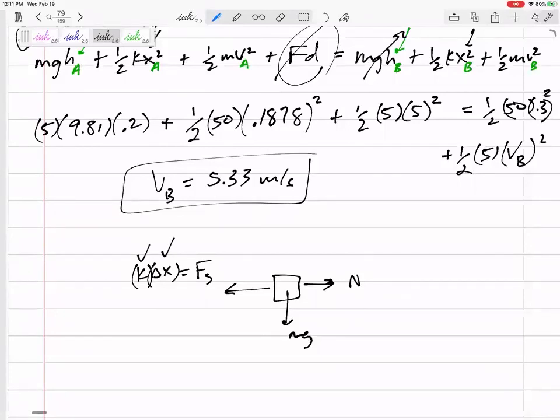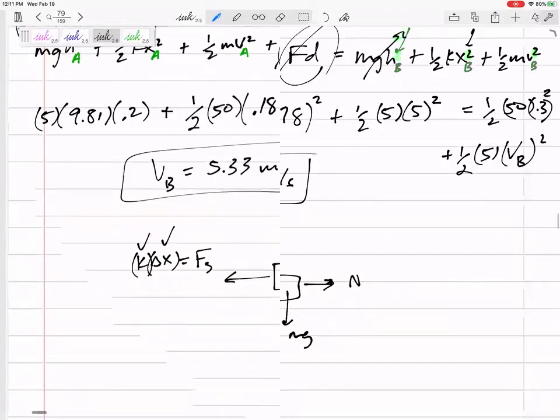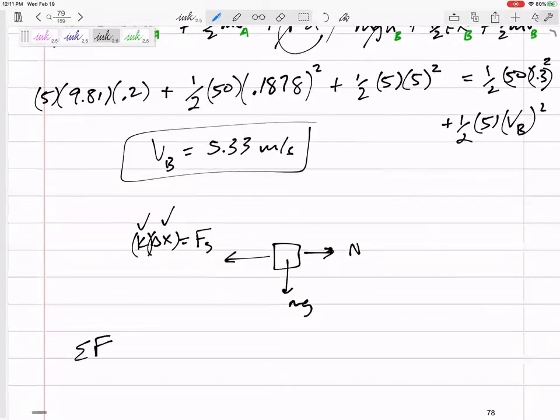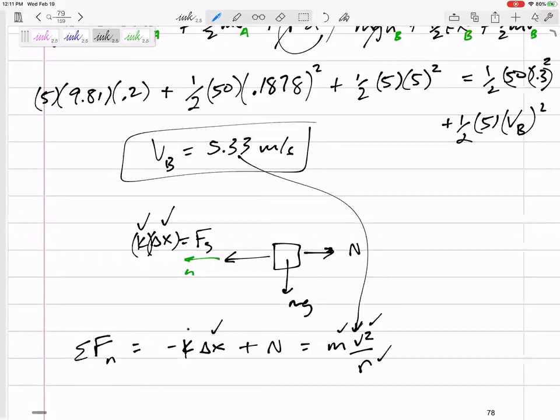So if we know the k is 50, we know the delta x would be 0.3. We know that force. And so I would just sum the forces in this direction. And don't forget, if it's traveling a circular path, so that's the normal direction. I would sum the forces normal tangential. So I'd sum the forces in normal. Negative k delta x plus n equals not 0, but m v squared over rho. And so now if I know the v, I know the m, you know everything except for n.